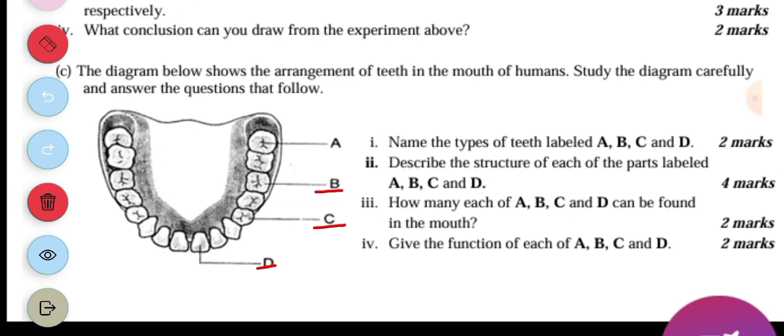Then the premolars, the premolars are eight, four at the upper part, four at the lower part. The next one is the molars. The molars are twelve, six at the upper part, six at the lower part.